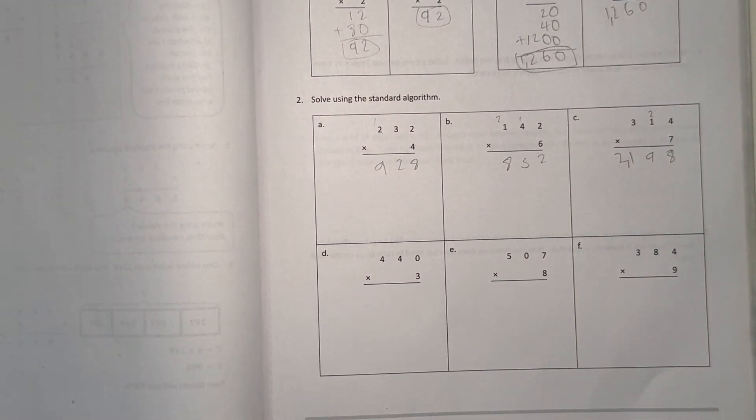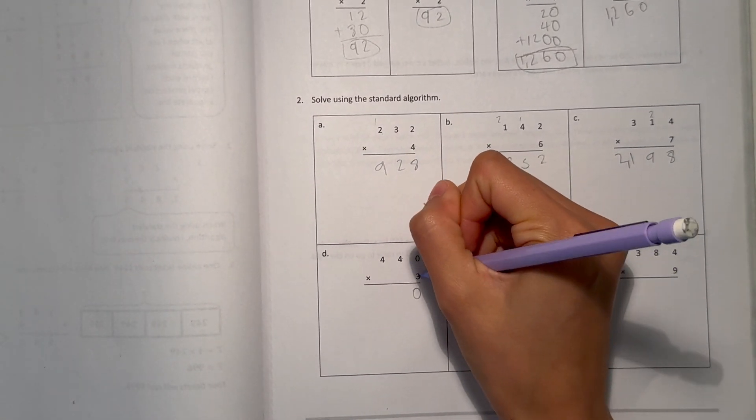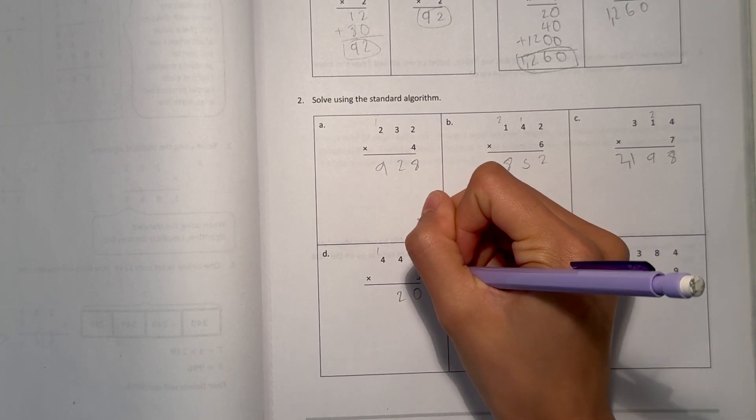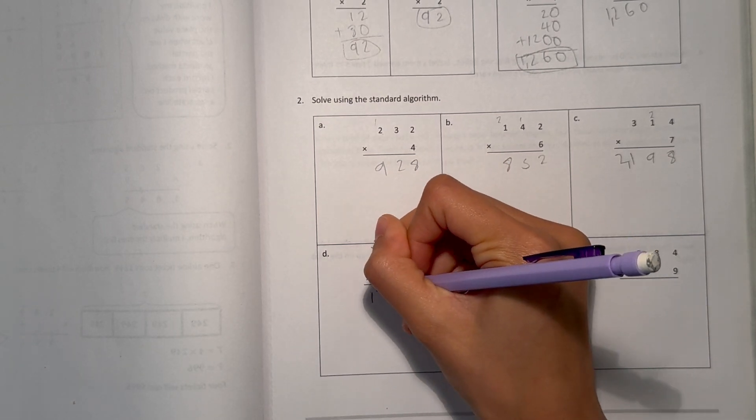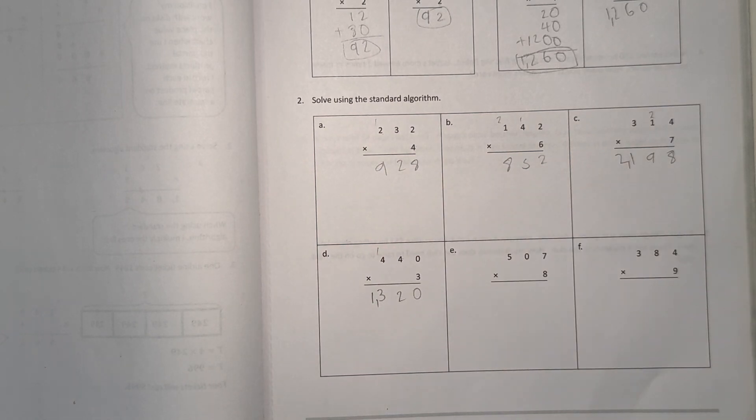Now let's look at D. 0 times 3 is 0, 4 times 3 is 12, and 4 times 3 again is 12, but plus 1 is 13. So our answer is 1,320.